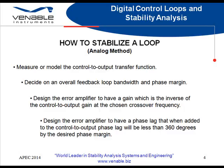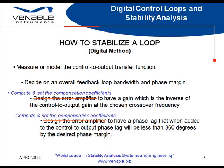The process for stabilizing a digital loop is essentially the same as the analog process. Steps 1 and 2 remain the same. First, we will measure the control-to-output transfer function. The solutions that I will present here will demonstrate the ability to measure this directly, even though it is a combination of analog and digital measurements. Next, you decide on your bandwidth and phase margin. Then, finally, we will compute the compensation coefficients that will be programmed into the target processor to achieve the required gain and phase margins and then set them.